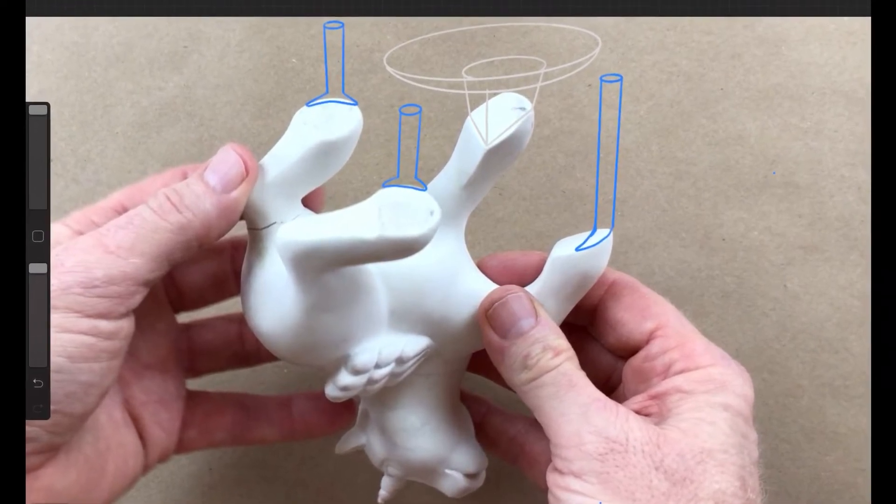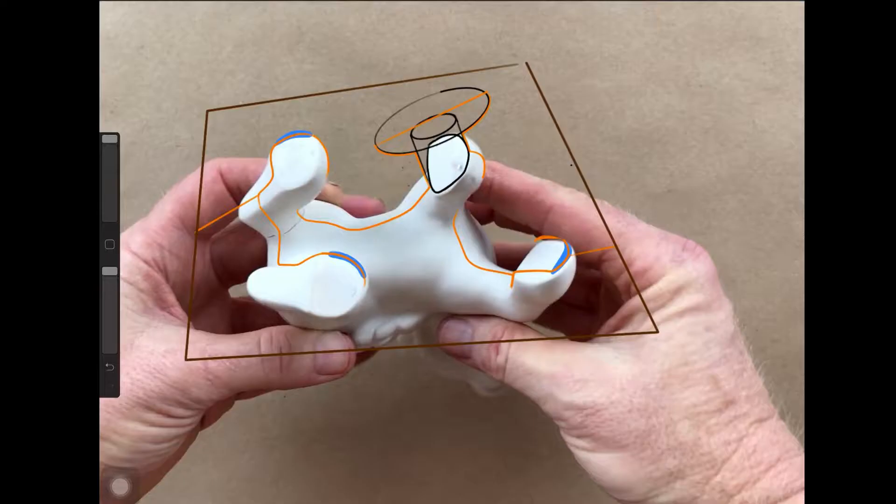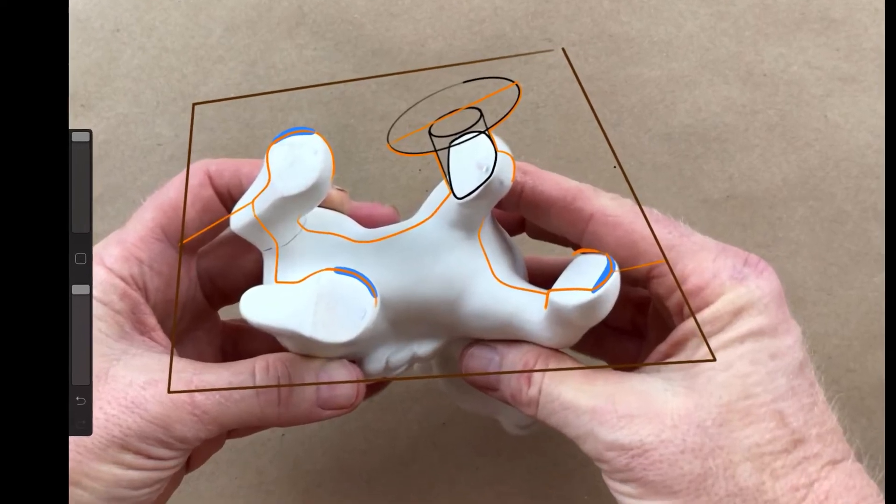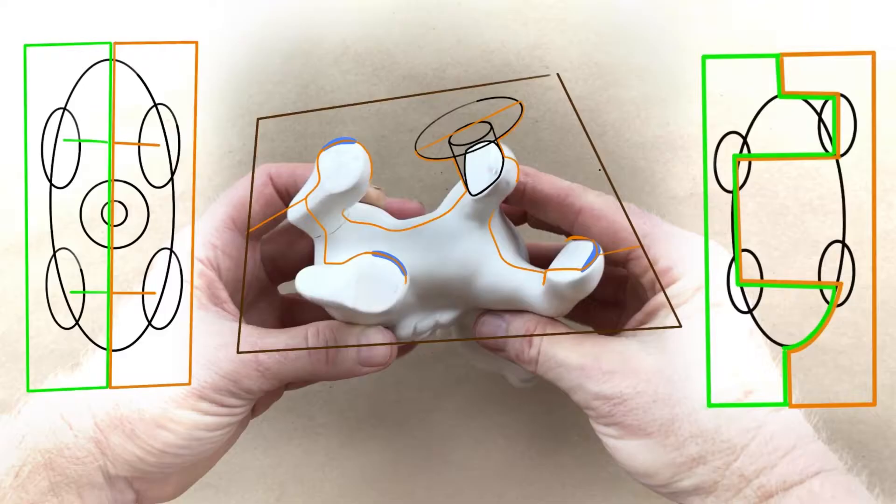Speaking of planning, let's take a look at how we're going to cut this thing. Here's a diagram of how I'm going to cut this mold.